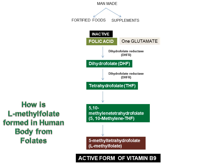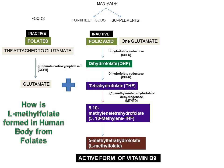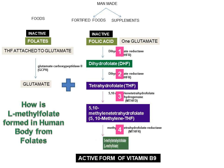Folic acid has only one glutamate molecule, whereas food folates have tetrahydrofolate attached to a glutamate tail. The glutamate tail has to be removed by the enzyme glutamate carboxypeptidase 2, which is located in the lining of the small intestine — so food folates are now in tetrahydrofolate form. This tetrahydrofolate forms 5,10-methylenetetrahydrofolate via the enzyme 5,10-methylenetetrahydrofolate dehydrogenase, and then MTHFR converts it to L-methylfolate. Folic acid requires 4 conversion steps; food folates require 3 conversion steps to form L-methylfolate.